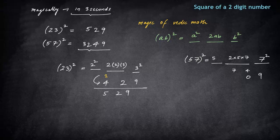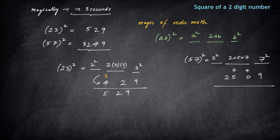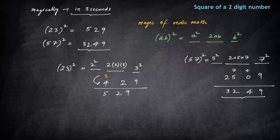Last spot is being filled by 5 square. 5 square is 25. So you will write both the digits as 25 here. So the answer then will be 9, 4 and 32. This is what is the answer. This is how we have written the square of 57. Isn't that magical?